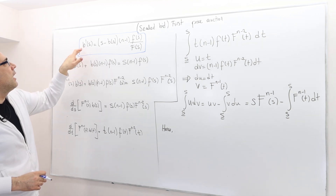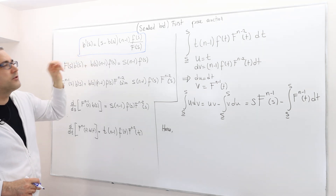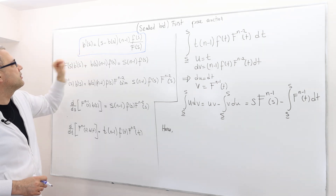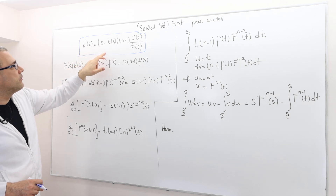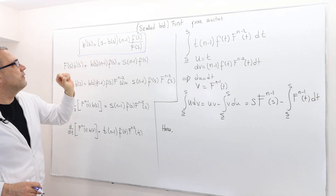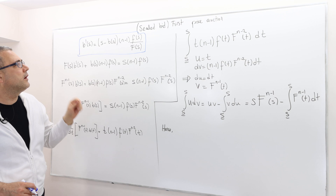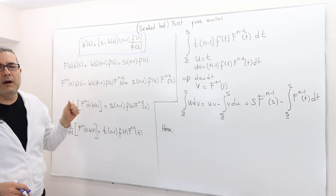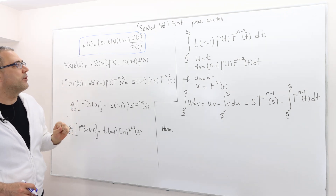Remember, the derivative of b — the strategy function — was equal to s minus b(s), times n minus 1, multiplied by small f divided by capital F.